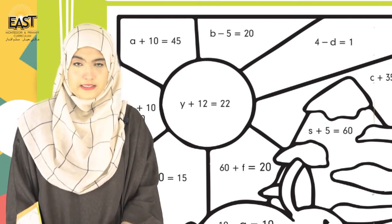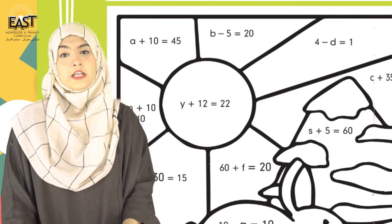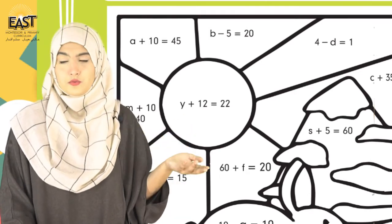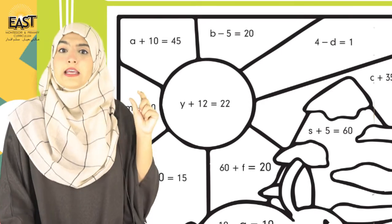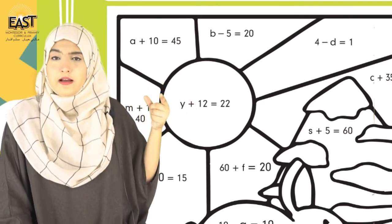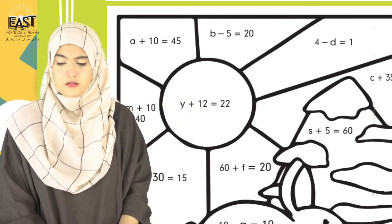Which is on page number 99, bilkul page ke akhir meh diya hua hai. Rule of operator ka reverse rule - ki agar ek taraf plus hai, is equal to ke udher jake minus ho jayega. Agar yahaan pe minus hai, equals to ke udher jake plus ho jayega.